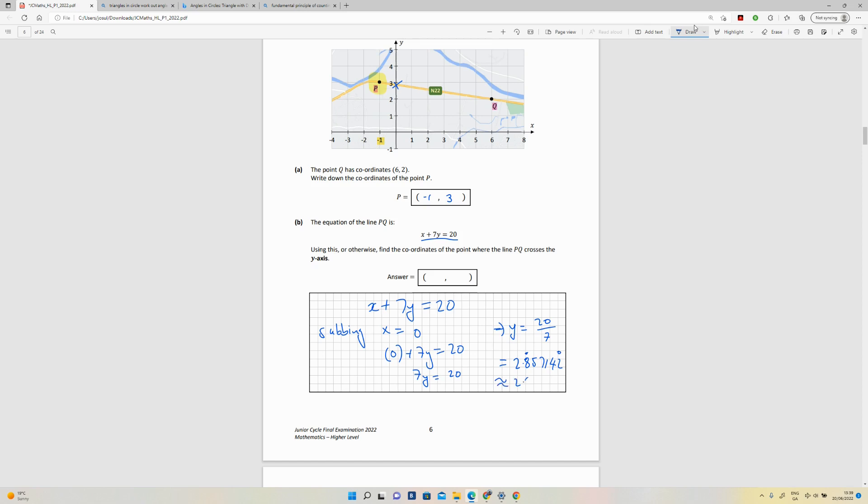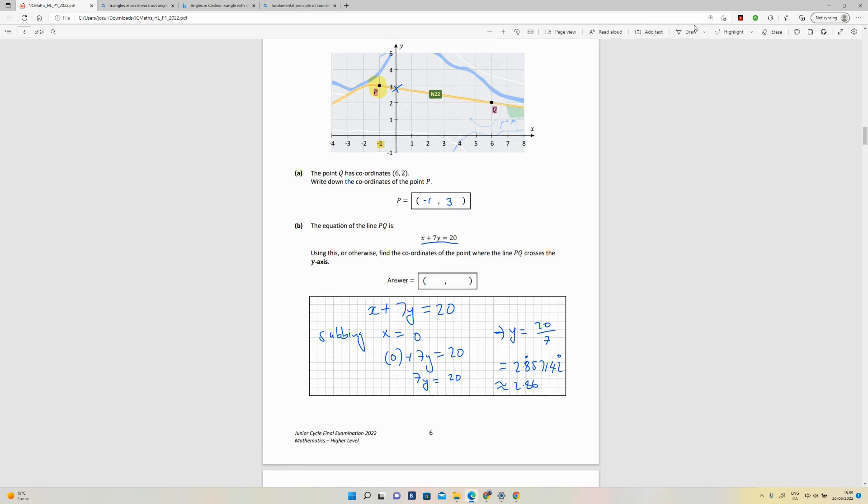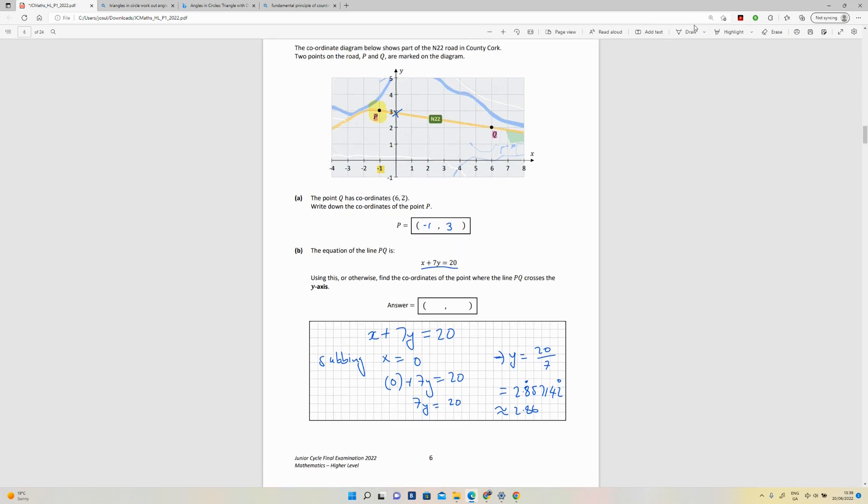I'd bring that up to 2.86. So going back to the diagram, you can see it's certainly over 2.5, it's closer to 3, so it's 2.86. That's the answer there. So we're going to put in 0 for the x and 2.86 for the y. That's what we wanted to do on that one.